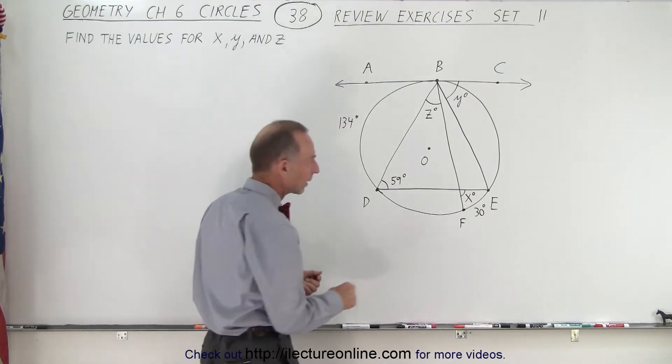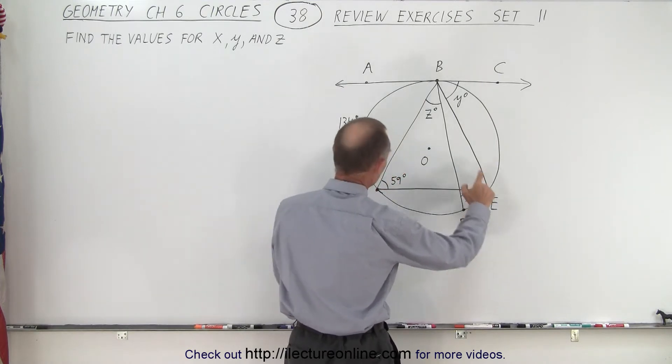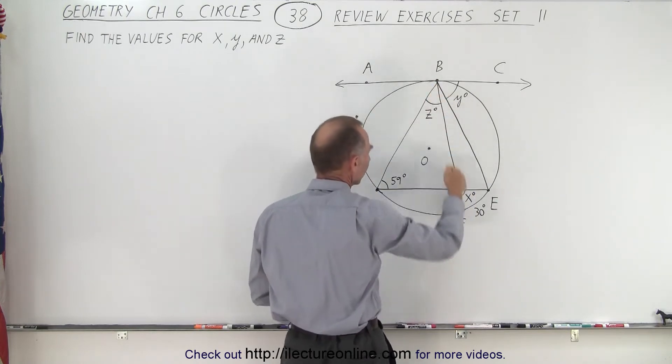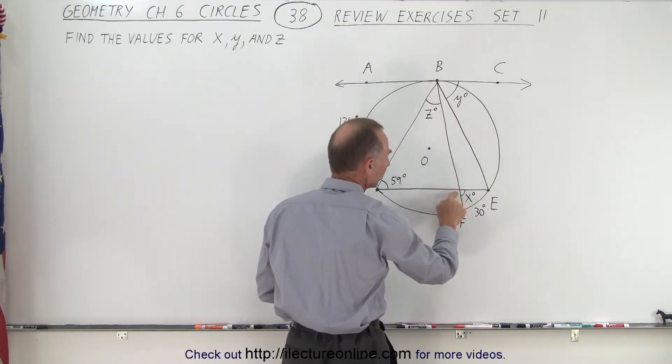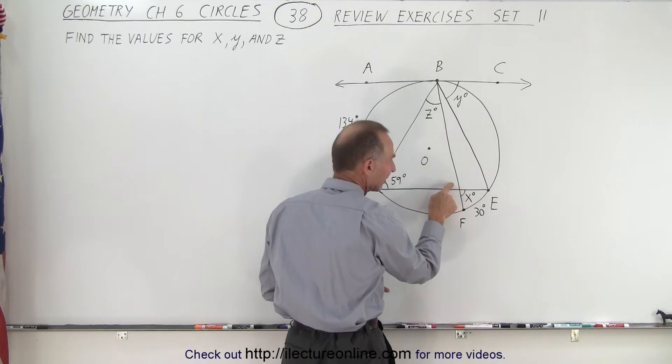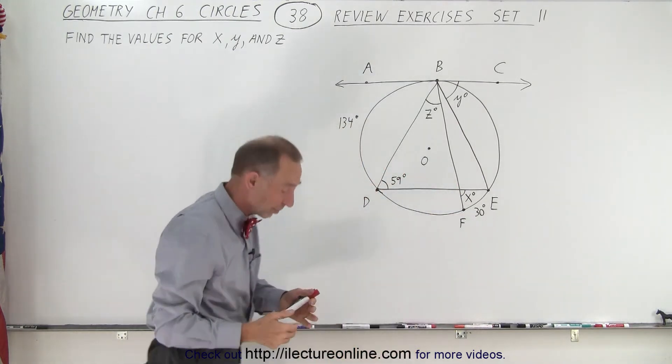Notice that we're given this measure for the arc, and we're given the measure of the arc over here. Those two lines cross right here at this point, and so the measure of this angle, which is equal to the measure of this angle on the other side, is equal to one-half the sum of these two. So that makes it easier to find x.